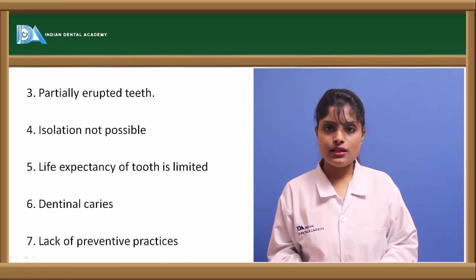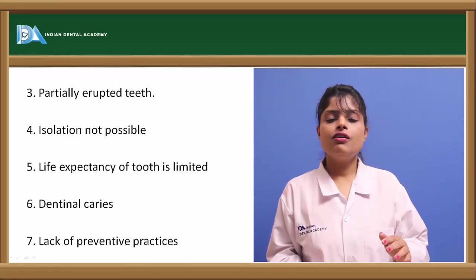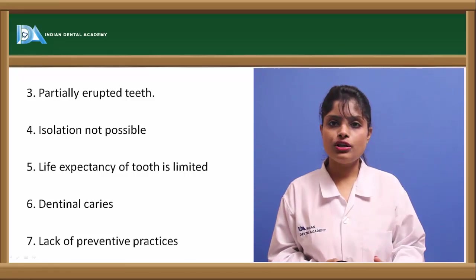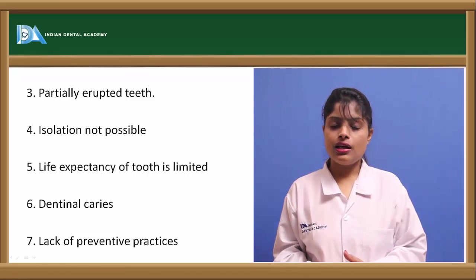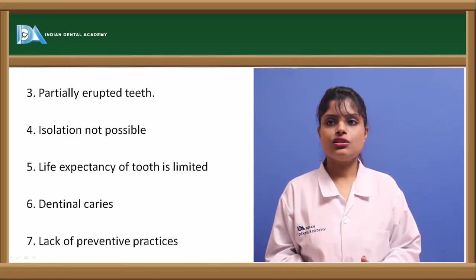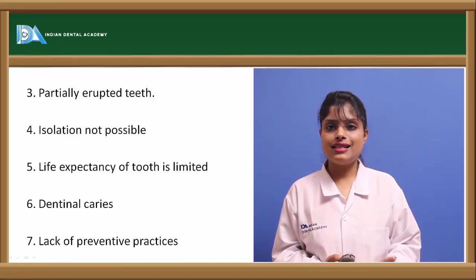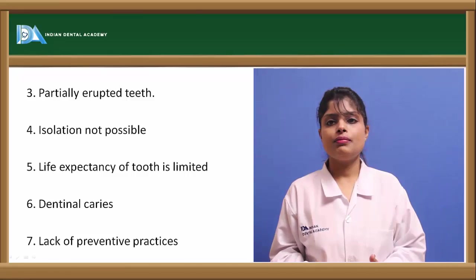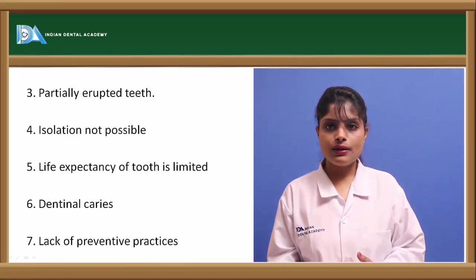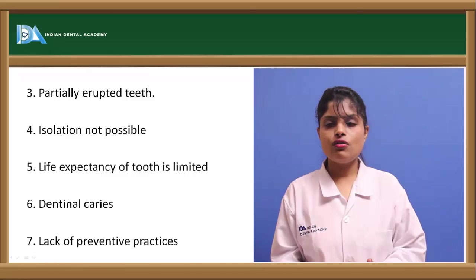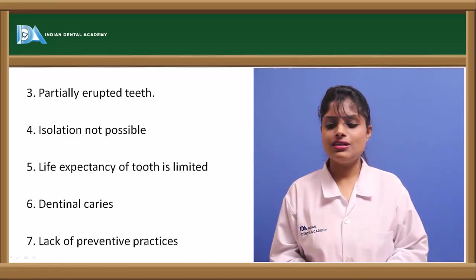Even in the case of a partially erupted tooth which is covered by a flap of mucosa or the operculum, it cannot be pit and fissure sealed. Even in a tooth where isolation is not possible, the life expectancy of the tooth is less in the oral cavity — for example, in a primary tooth if more than two-thirds of the root is resorbed — then in the case of deep dentinal caries or in the case of lacking preventive practices.